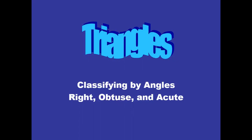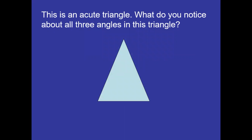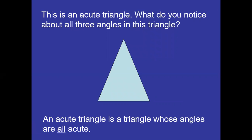On the basis of angles, a triangle can be named as a right triangle, obtuse triangle, or acute triangle. In an acute triangle, all three angles are acute — meaning the angles are less than 90 degrees, or between zero and 90 degrees. So all three angles in this triangle are acute angles, making it an acute triangle.